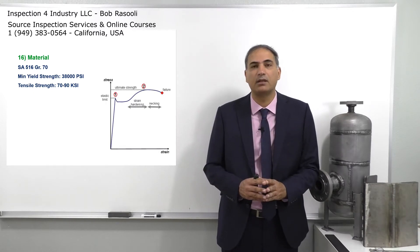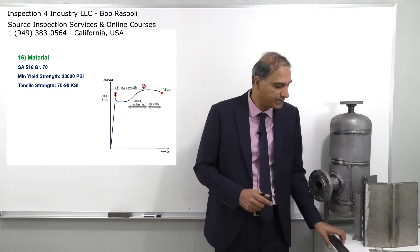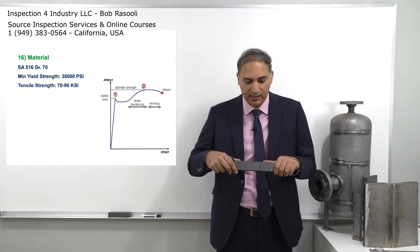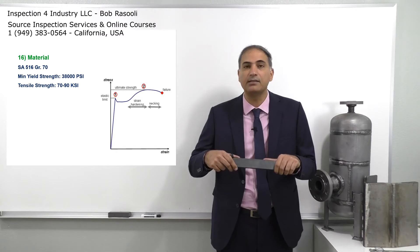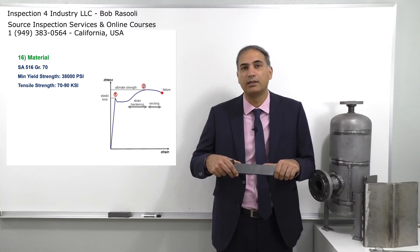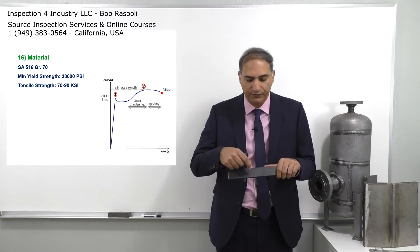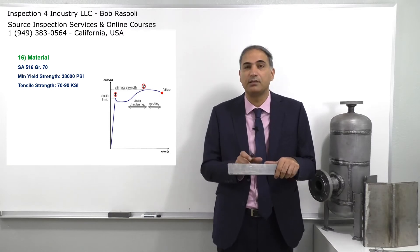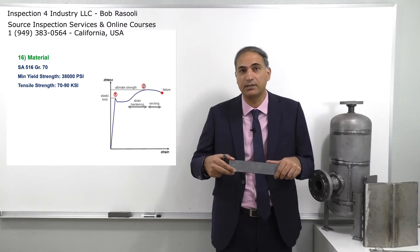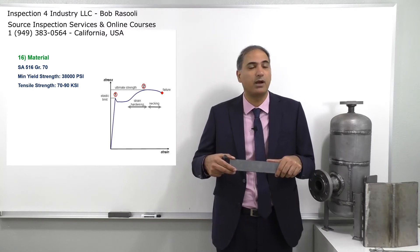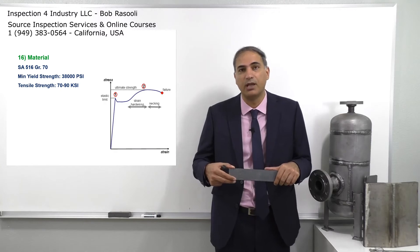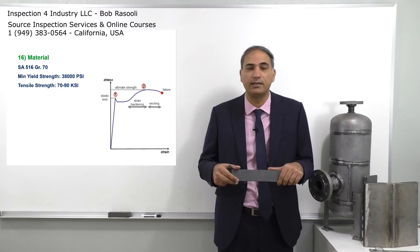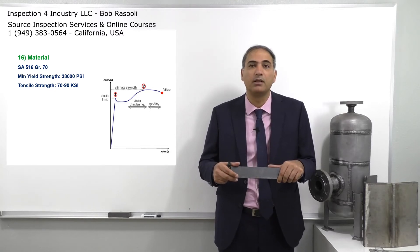If I put this material in a tensile machine and start pulling it, up to a certain point, if I release the load, it's going to return to the original dimension. I draw a line here, pull the material, and the machine reads some increase in length — but when released, it returns to the original dimension. This is what happens below point number one on the curve.